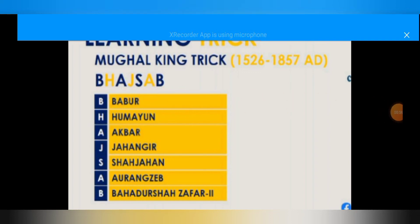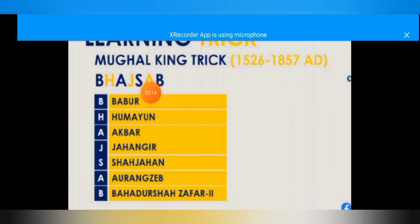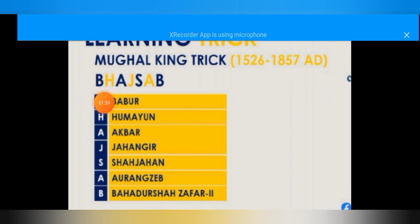Once you memorize the trick, it will not be very difficult for you. You can apply it using BASB — B stands for Babur, the first king of the Mughal era.